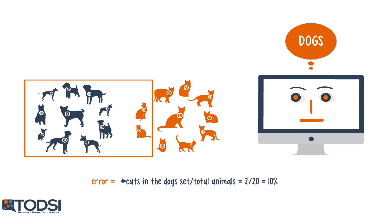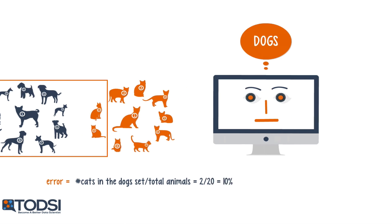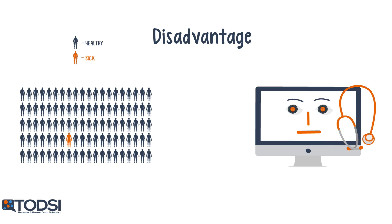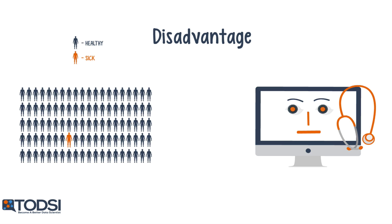The calculation is simply the number of incorrect classifications made by the net divided by the total number of classifications. Unfortunately, error has a significant drawback as a performance measurement, especially when the data points are skewed towards one class over another. Let's assume we are tasked with developing a medical model to diagnose a brain tumor that only occurs in about 1% of patients.